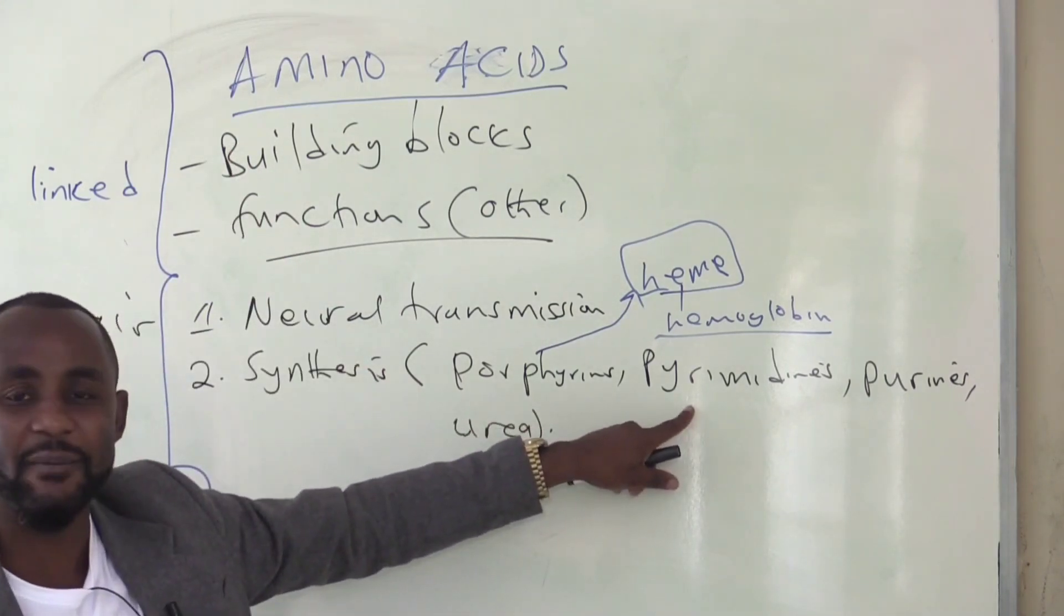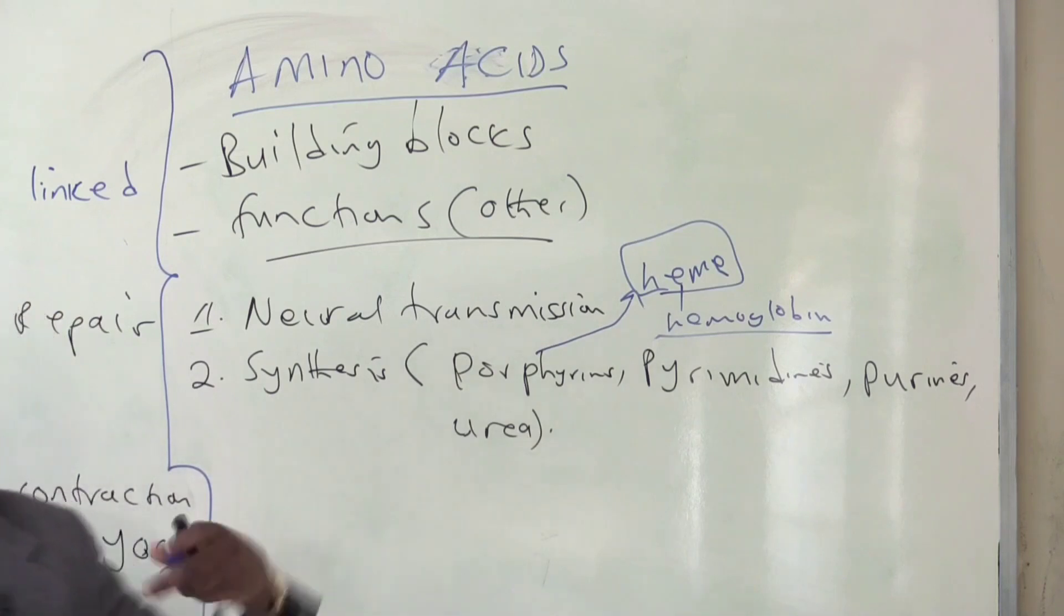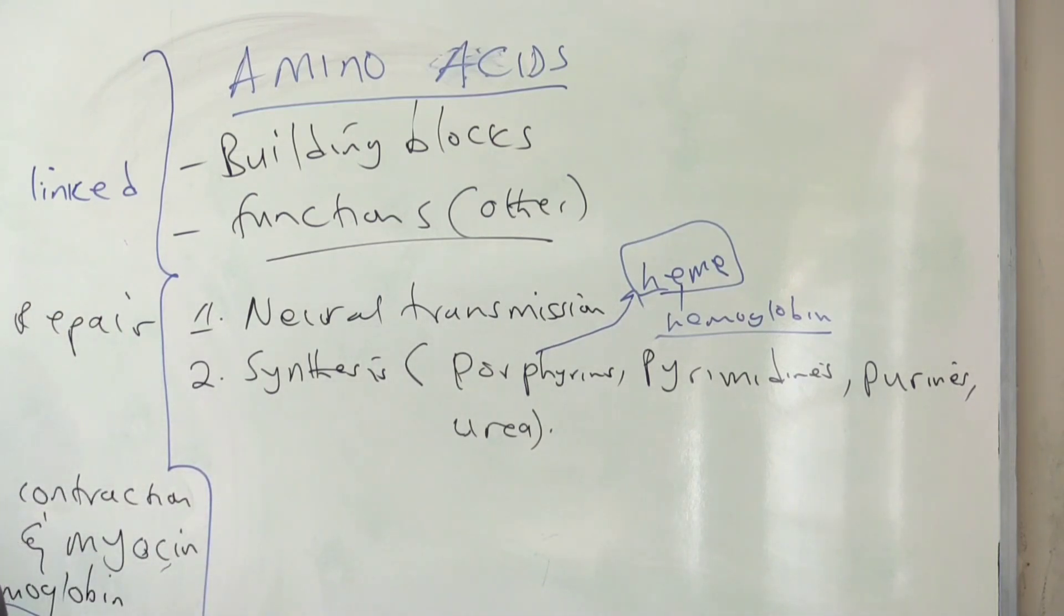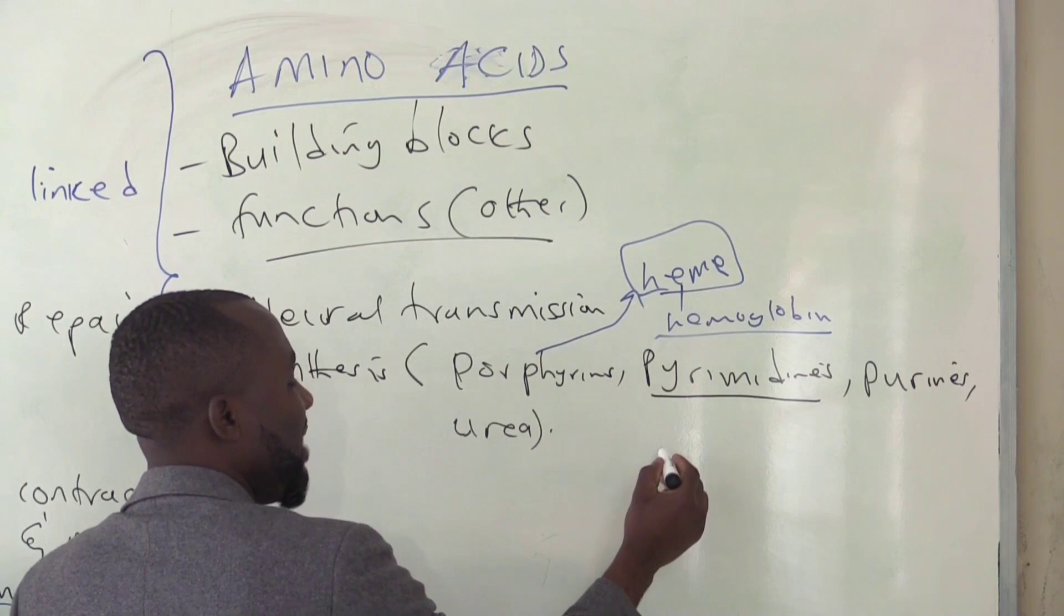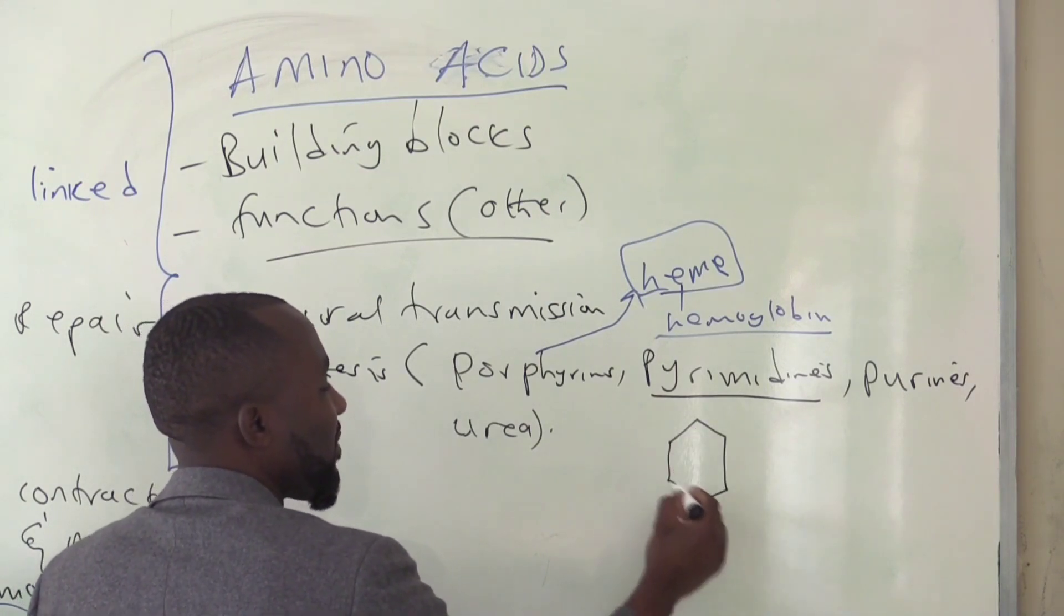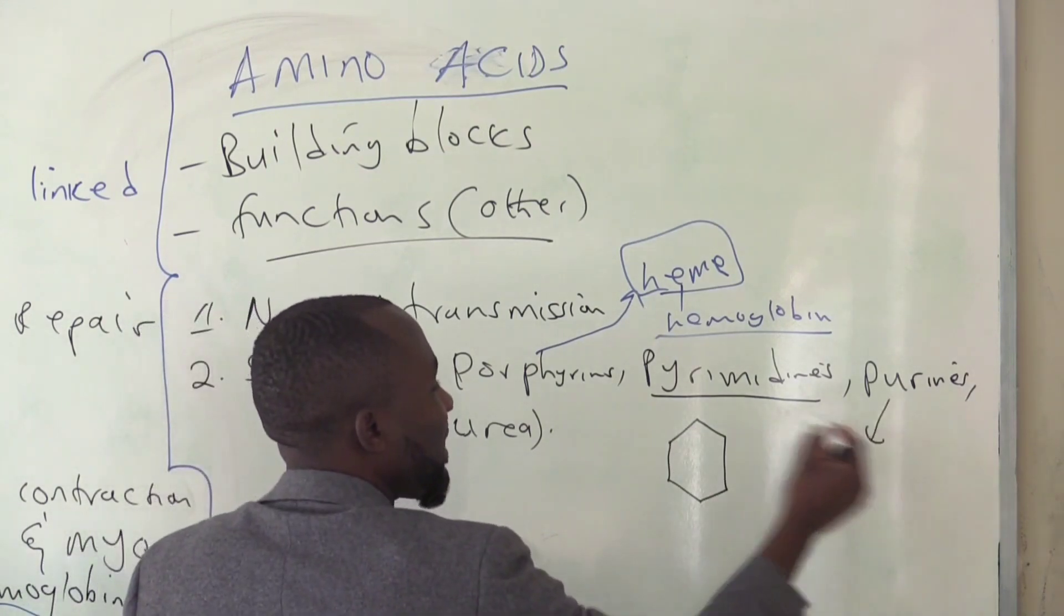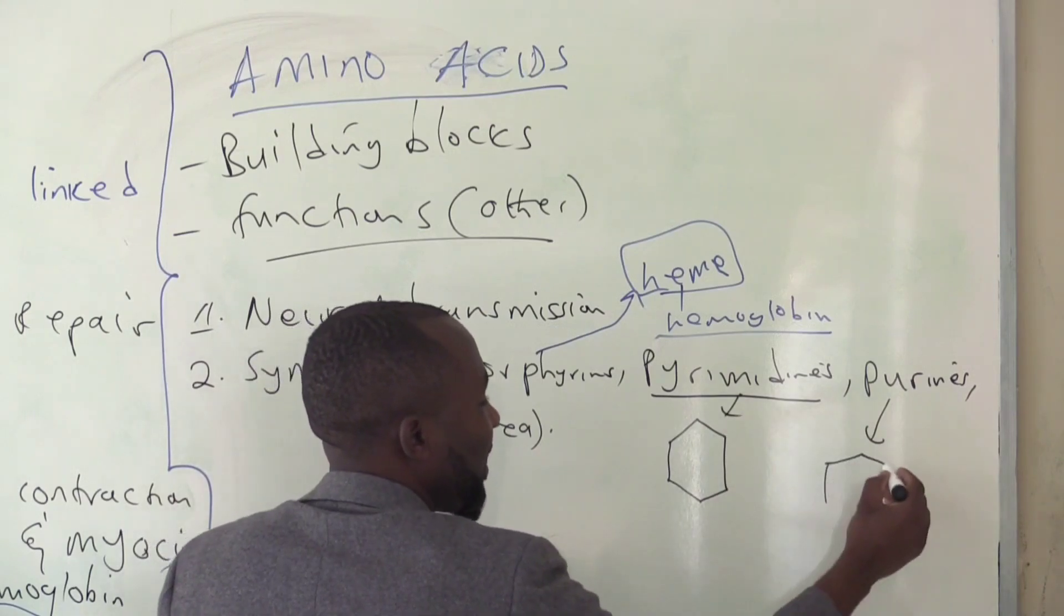What about a pyrimidine? When we come to nucleic acids, I'm going to talk about nitrogenous bases, which are used to make nucleic acids, DNA and RNA. And on the nitrogenous bases, I will explain to you to say, there are two types of nitrogenous bases. We have those that are called pyrimidines, and the pyrimidines have got a single ring structure, while purines have got a double ring structure.